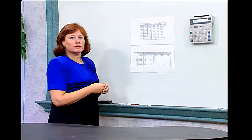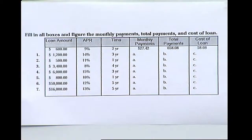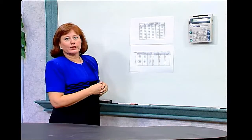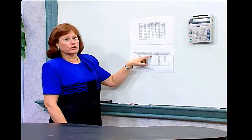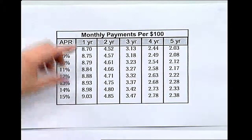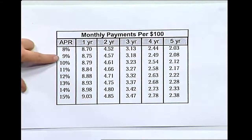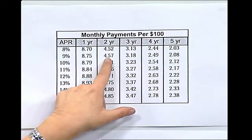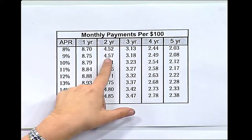You'll have the opportunity to practice some more problems like this, and careful use of the calculator will be a real time saver. In the first example, we have a loan amount of $600 at an annual percentage rate of 9% over a term of two years. We'll use the upper chart to figure out the monthly payments. We know it's a 9% loan for two years, so we come down the APR column to 9% and move across to the two-year column.